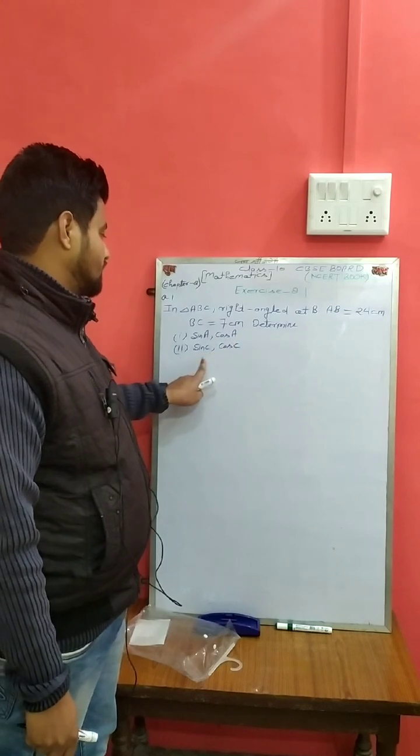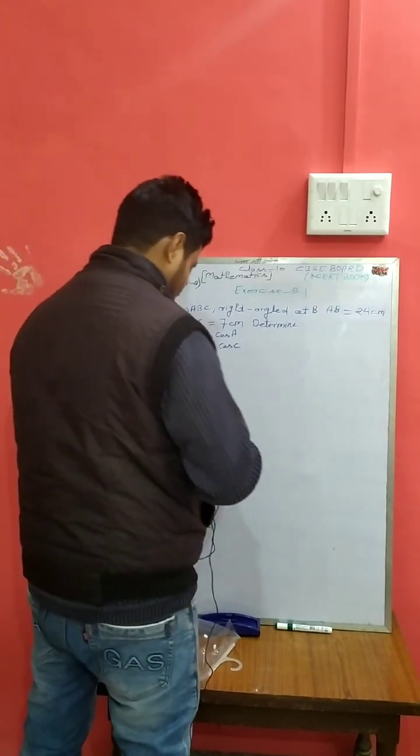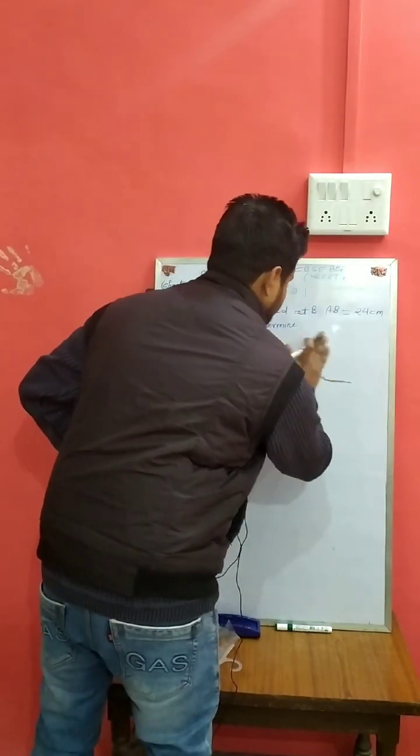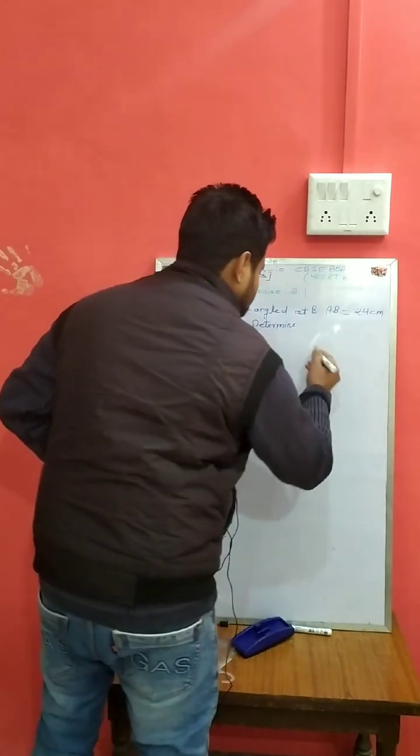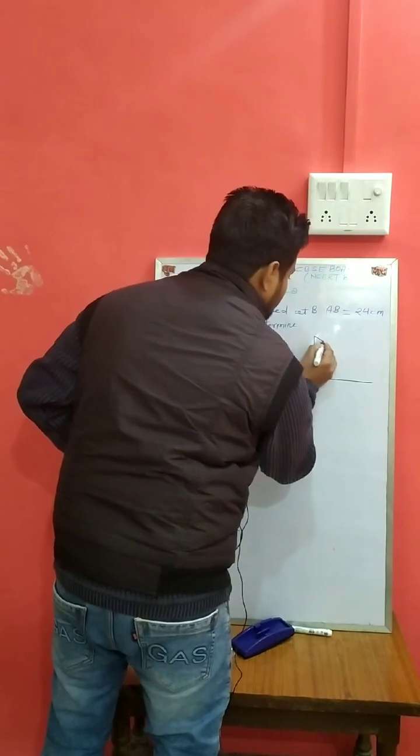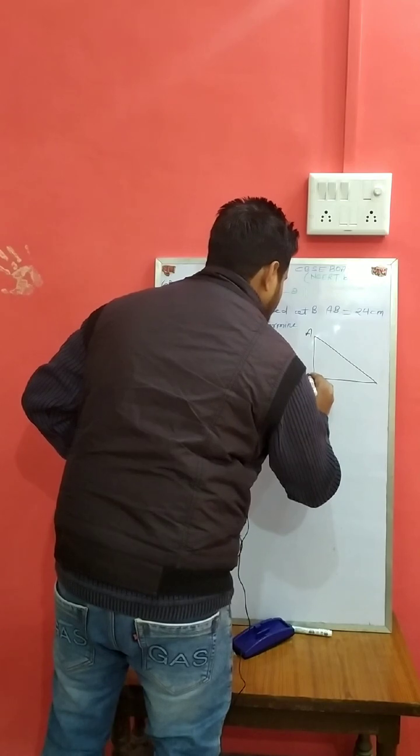So start. First make a figure. We draw right angle triangle ABC with the right angle at B. Given in the question, in triangle ABC right angle at B.